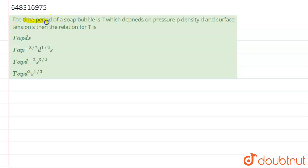The question says that the time period of a soap bubble is T and depends upon the pressure p, density d, and the surface tension s. We need to find the relation for T.